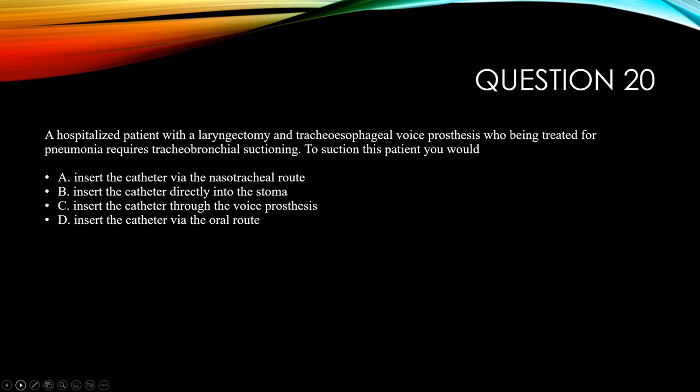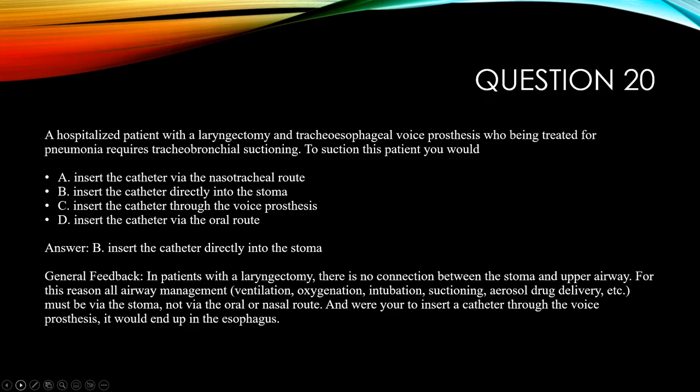Question twenty: a hospitalized patient with a laryngectomy and a tracheoesophageal voice prosthesis requires tracheal-bronchial suctioning. To suction this patient, you would insert the catheter via the stoma. Patients with a total laryngectomy have no connection between the mouth or nose and the lower airway, so the catheter must be inserted directly into the stoma to access the lower airway.